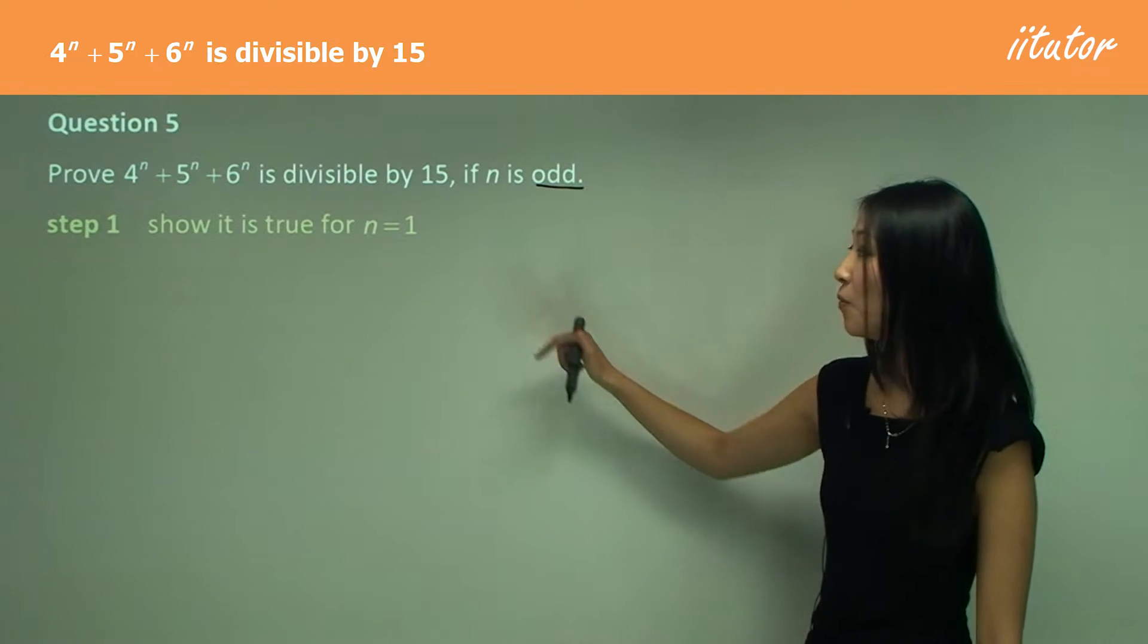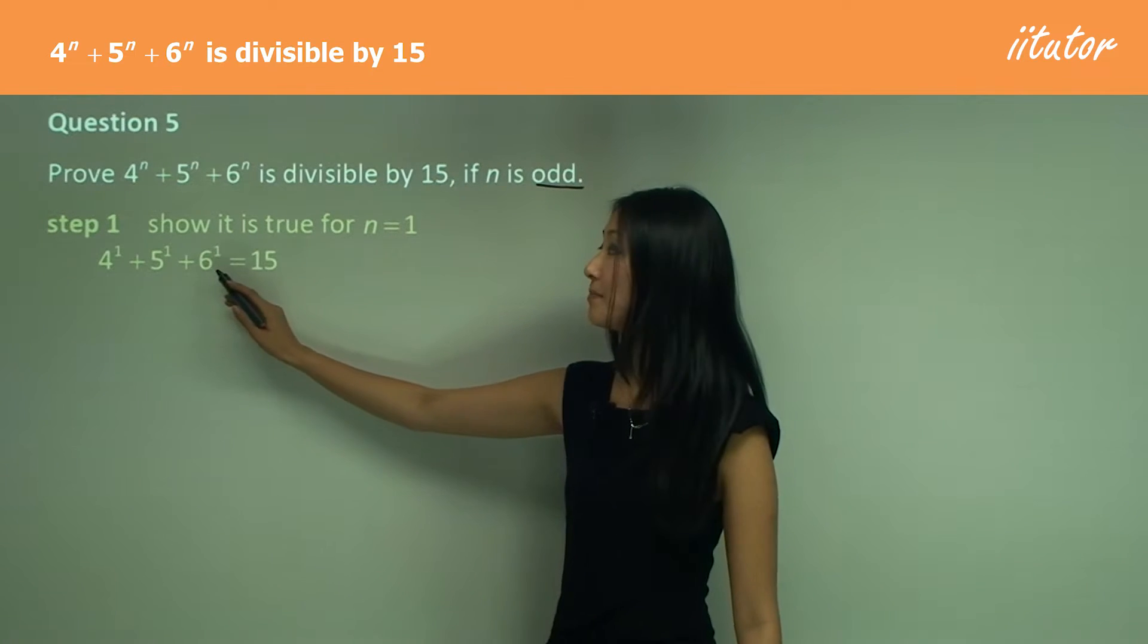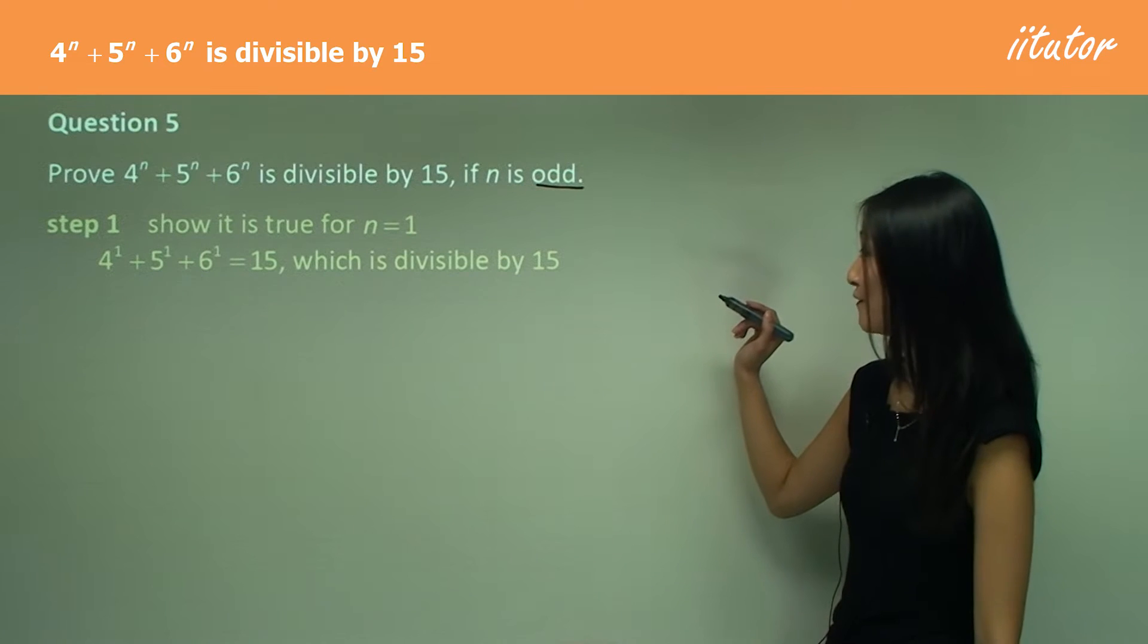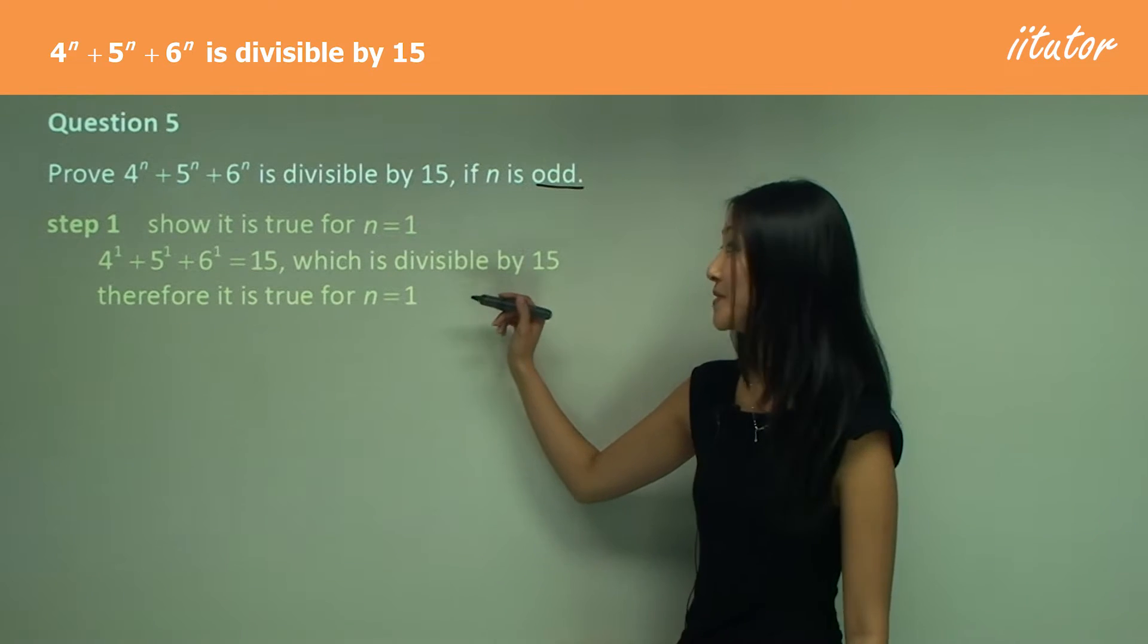So substituting one in, we get 4 plus 5, which is 9 plus 6, which equals 15, which is indeed divisible by 15. Therefore, it is true for n equals 1.